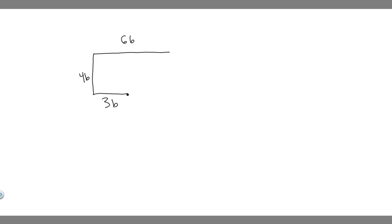We're trying to solve for two things here. Let's focus on A first. I went ahead and drew what was going on. We know they go three blocks to the west. This is north, east, south, west. So they go three west, four north, and then six to the east. They're trying to find her final position relative to her starting location.